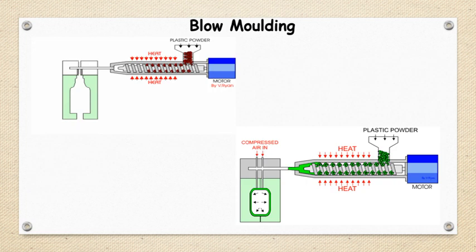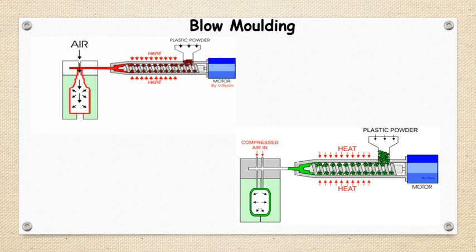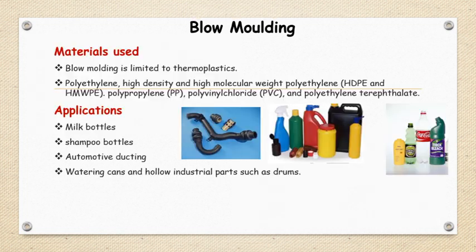This is the blow molding process. You can see this process through this animation: in the first step the parison is prepared, in the second step hot air is blown, and then you can remove the component — observe carefully this animation. HDPE is the ideal example for this type of manufacturing process.